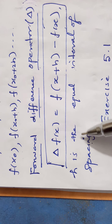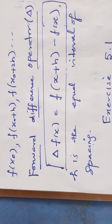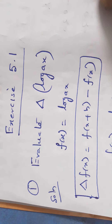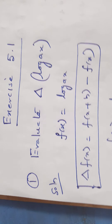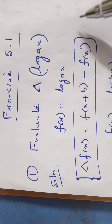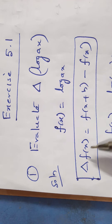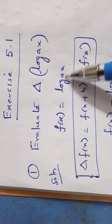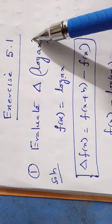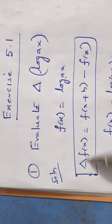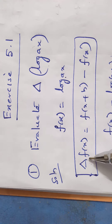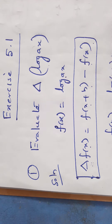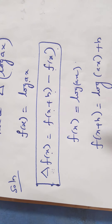Exercise 5.1: Evaluate Δ(log ax). Solution: Let f(x) = log ax. We apply the forward difference operator formula: Δf(x) = f(x + h) − f(x).